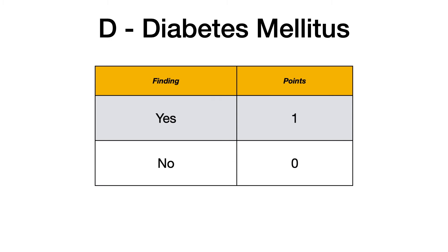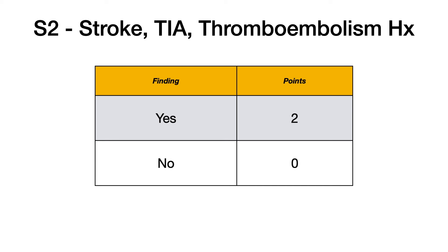The D stands for diabetes mellitus — one point if they have diabetes, zero if they don't. The S is S2, again because you can score two points here. S stands for stroke, and by extension includes a history of TIA or any type of thromboembolic event. If yes, they score two points; if no, zero. A prior history of stroke confers a much higher risk of future stroke, which is why it carries a weight of two, whereas something like diabetes only scores one point.